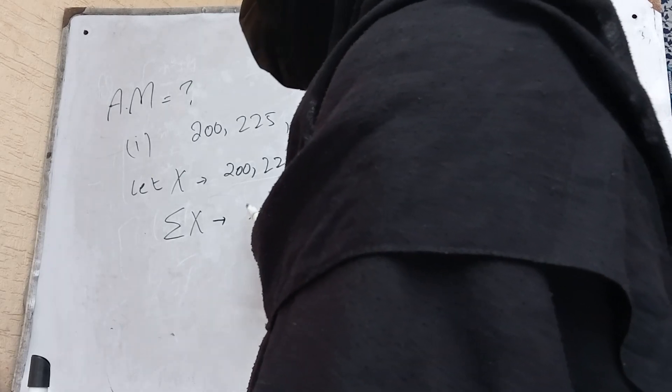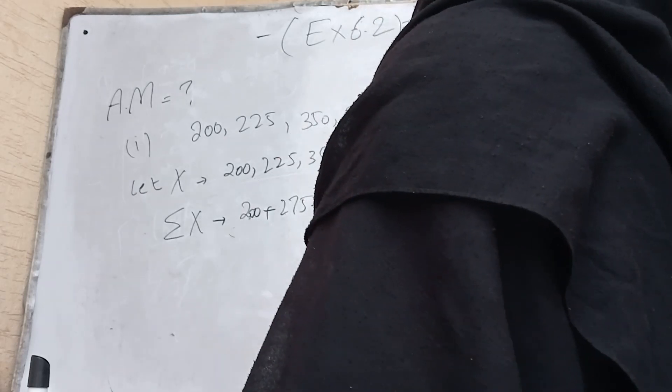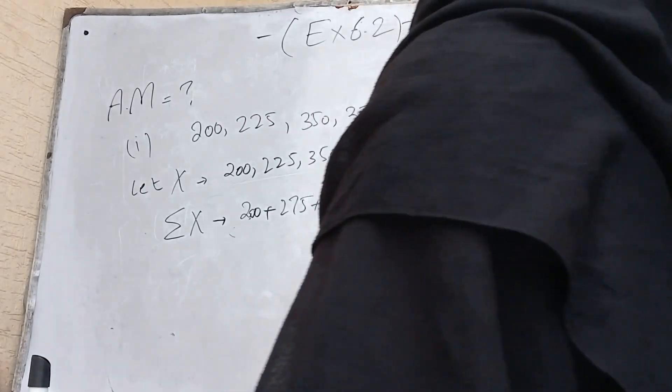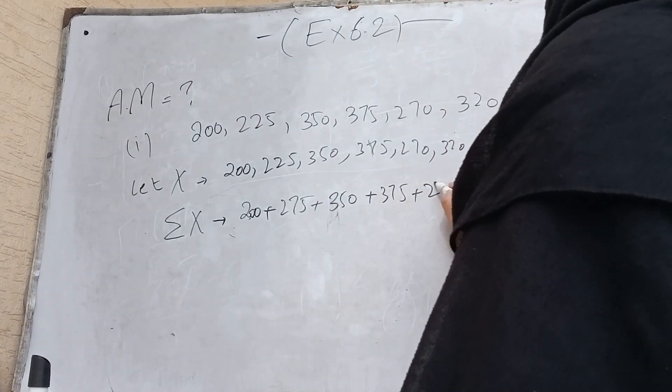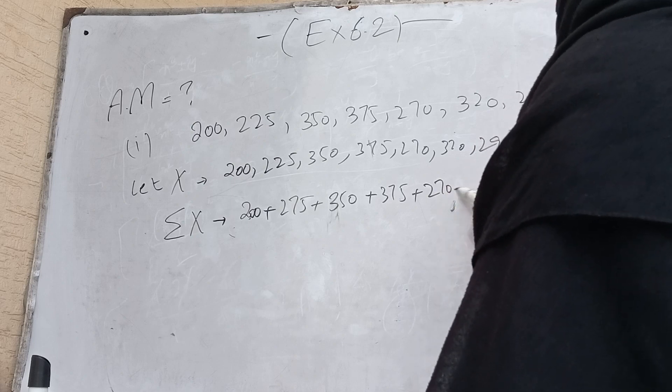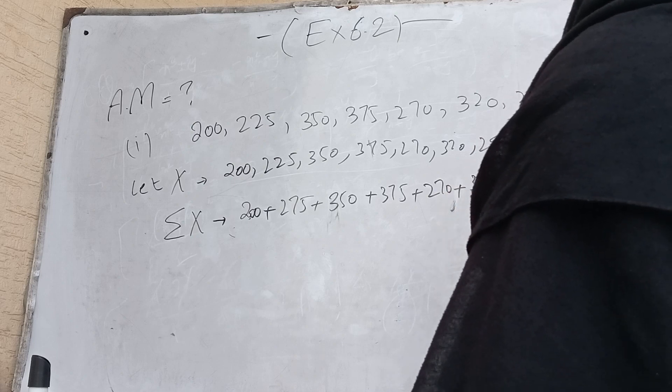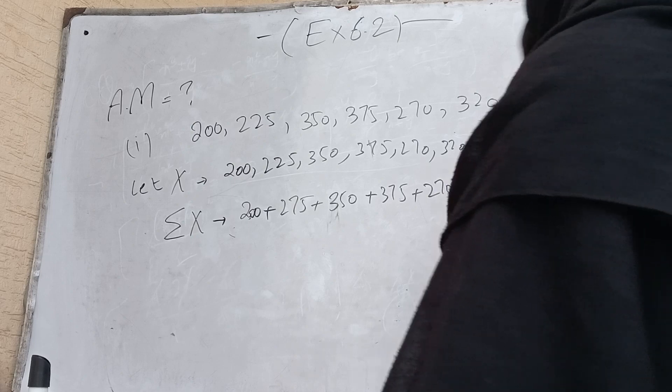So sigma x is equal to the data added up: 200 plus 350 plus 375 plus 270, 320, and 290.